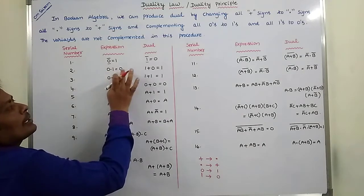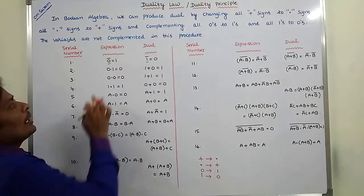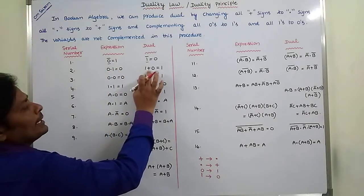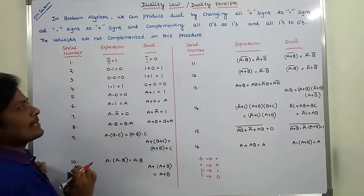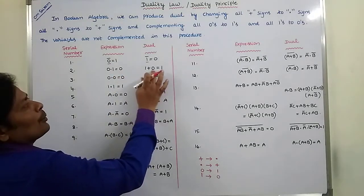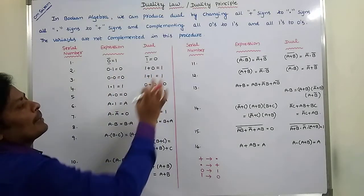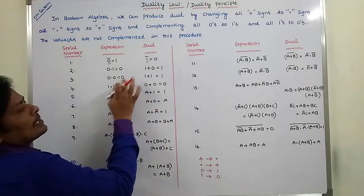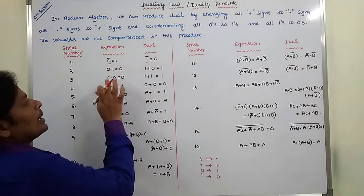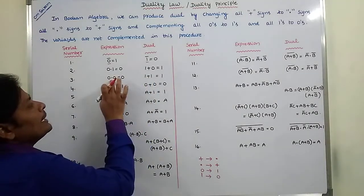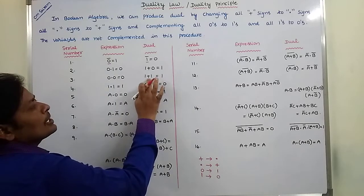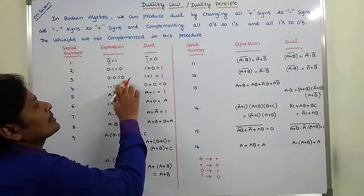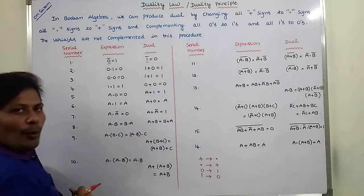Next, zero AND one equals zero. Its dual: zero is changed to one, AND sign is changed to plus sign, one is changed to zero, and zero is changed to one — giving one plus zero equals one. Next, zero AND zero equals zero: zero changes to one, AND changes to plus, zero changes to one, and zero changes to one.